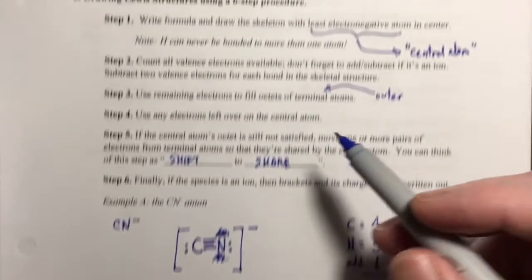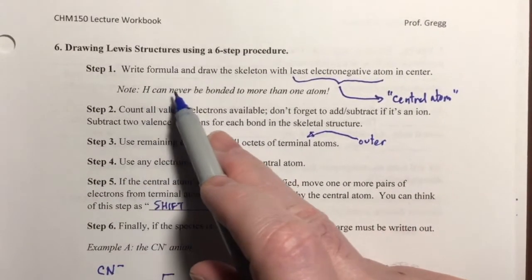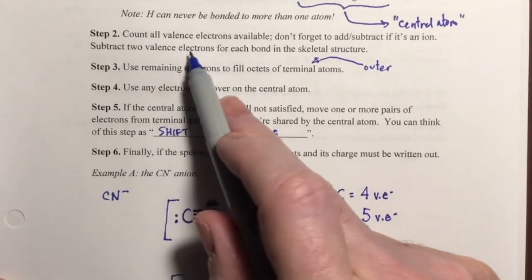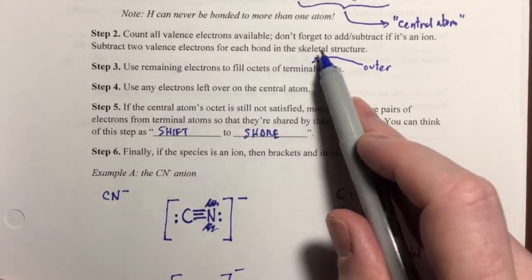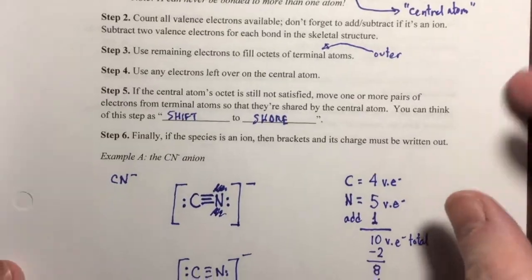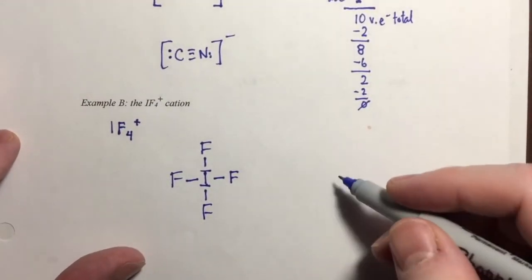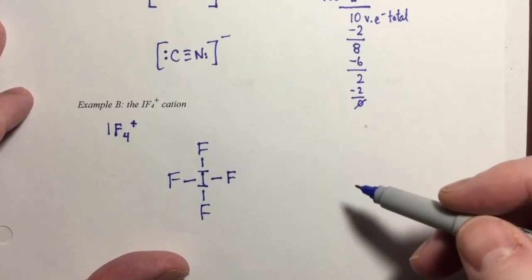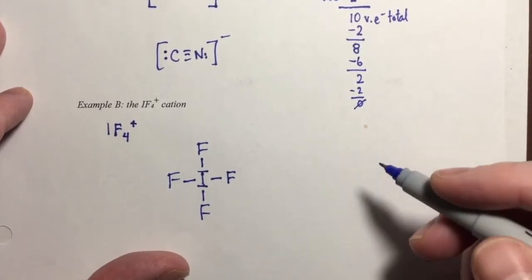So I write the four fluorines equally arranged around iodine and draw a single bond to each — that is the skeletal structure. We call it the skeletal structure because it's just the bones; I haven't placed all the valence electrons yet. Step one is finished.